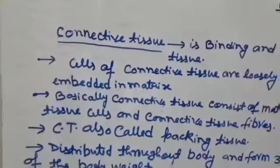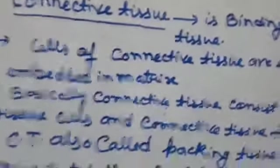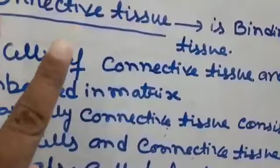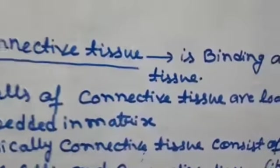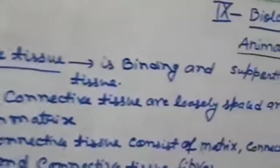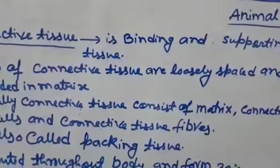Today I discuss connective tissue. The name indicates, connective means joint karnewala, jodne wala - what does it mean? Joint karnewala. Connective tissue is a binding and supporting tissue of the animal body.